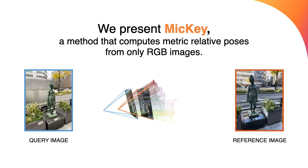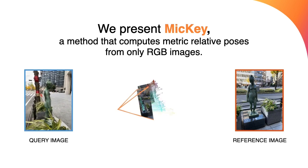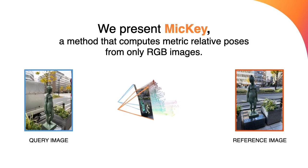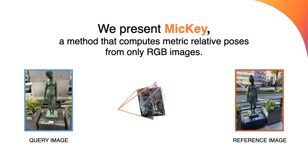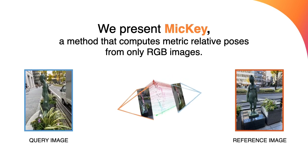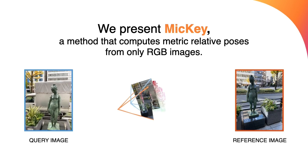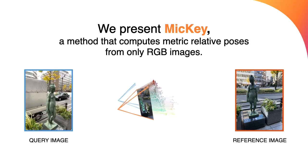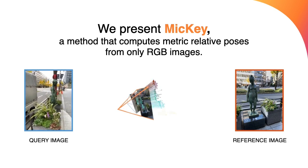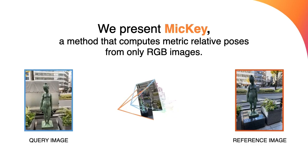In this work, we present MICI, a method that computes metric relative poses using only 2 RGB images. Instead of relying on 2D keypoints, MICI predicts correspondences in 3D, knowing exactly how far apart those two images are. Having metric relative poses enables applications such as augmented reality, where estimating the distance to the AR assets in the real world is needed for a realistic AR experience.